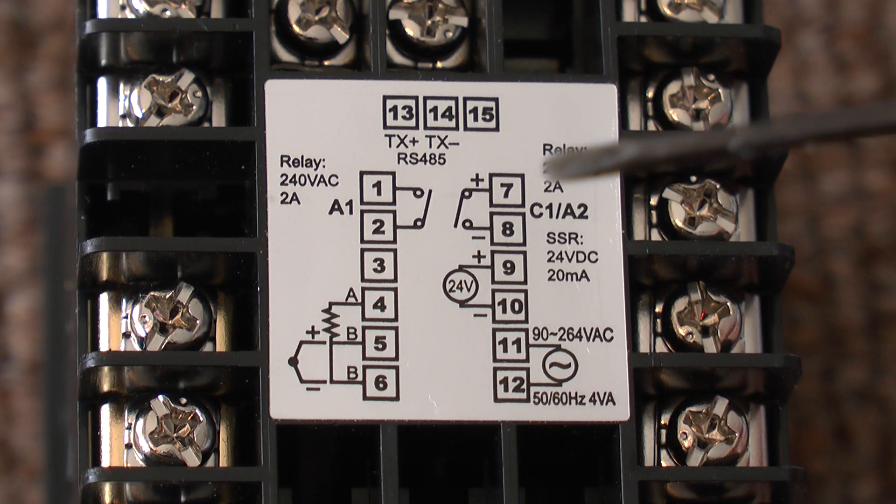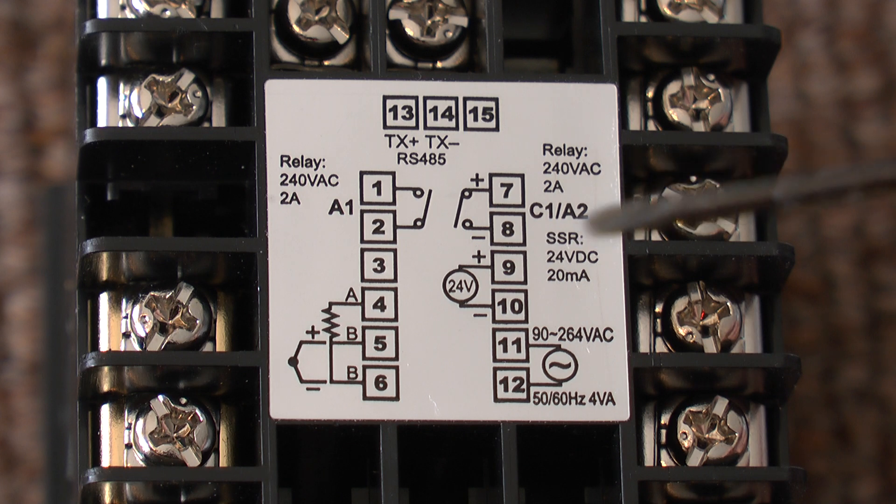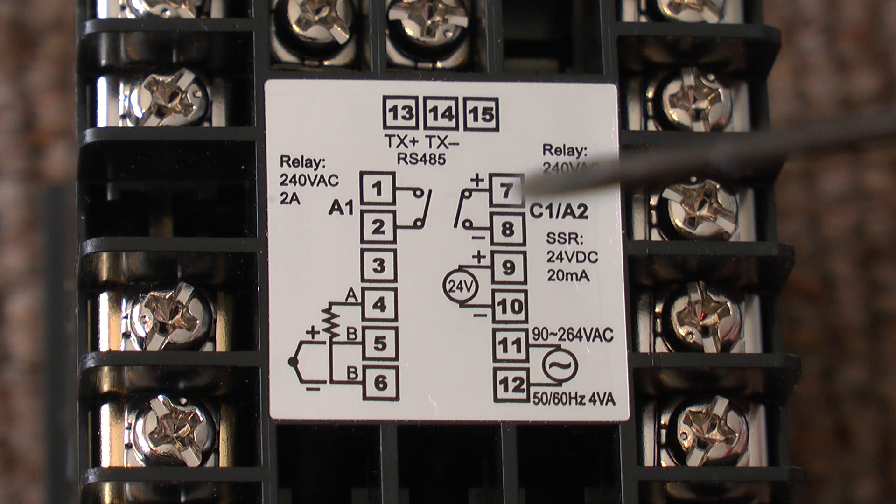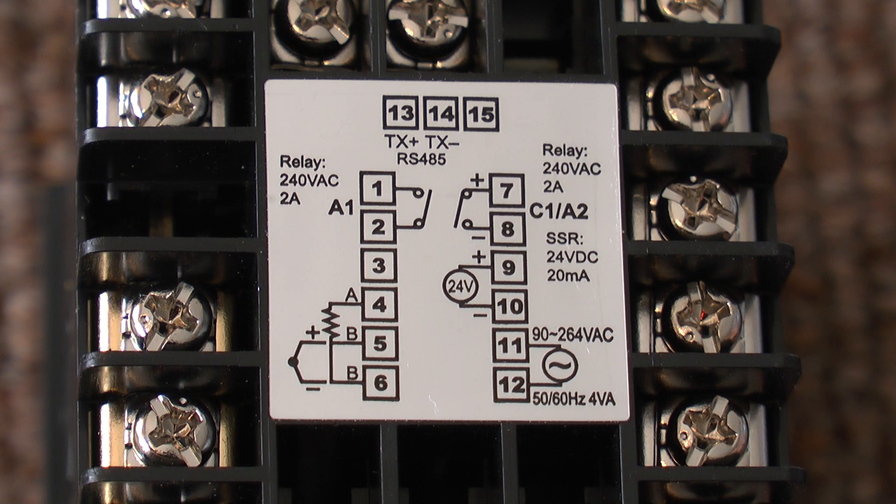The output for this controller gets connected to terminals 7 and 8. This particular one is a relay output controller and therefore between terminals 7 and 8 you simply have a switch that can be used to turn on a contactor or relay.